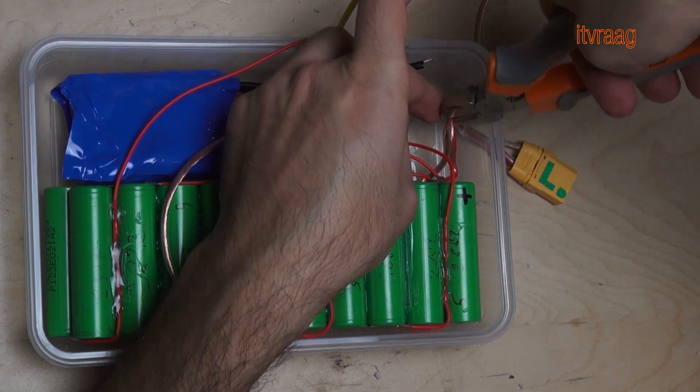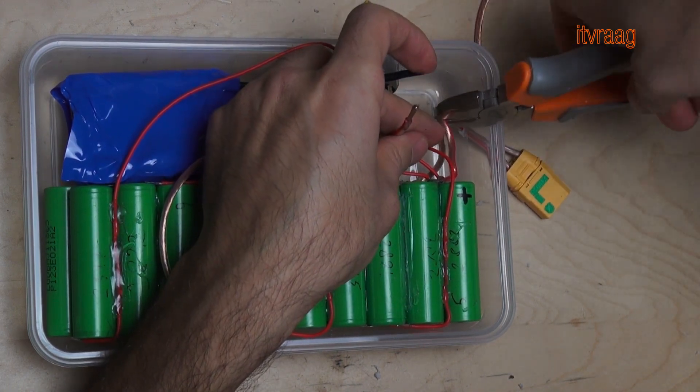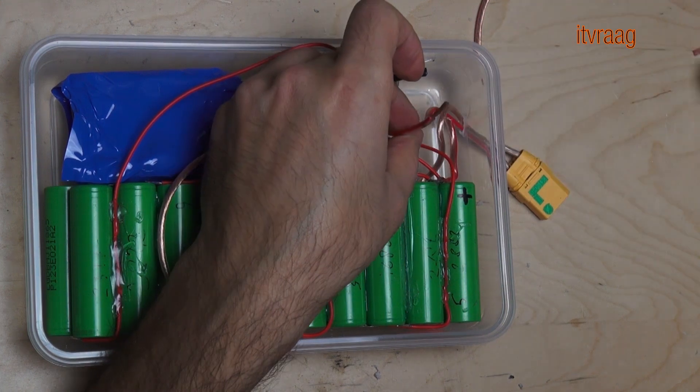Because I didn't want to resolder the input and output cables directly on the battery I decided to cut the existing cable and solder onto that.